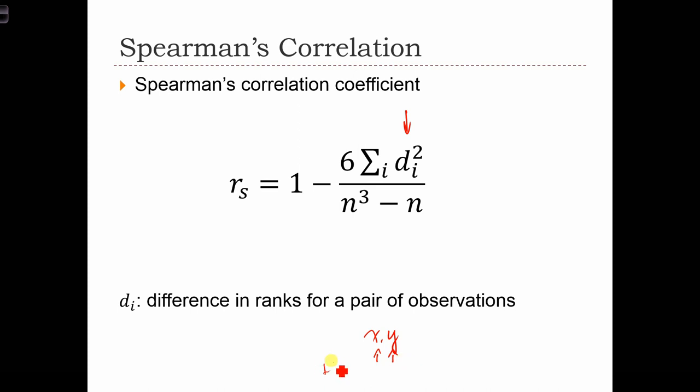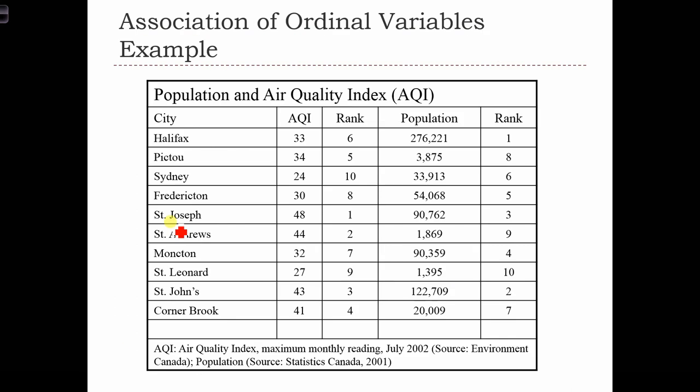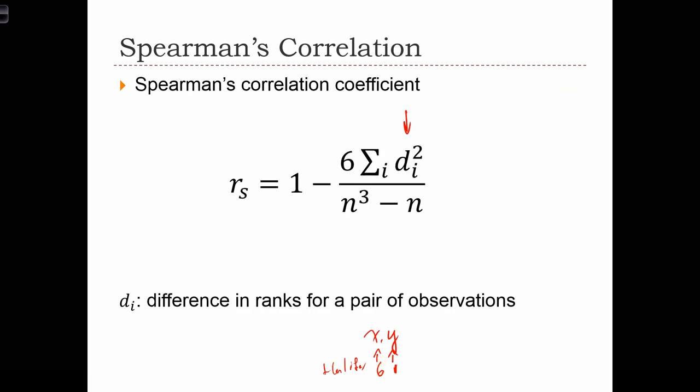So say a city, Halifax, we found that it was the largest city, so it has a rank of 1 in terms of population. And over here, it has an AQI ranking of 6. And therefore, the difference between these two ranks is 6 minus 1 equals 5. So di equals 5, and this term, di squared, equals 25. So we're going to calculate di squared for each observation, each city, sum them all up, and just compute this ratio in order to get the Spearman's rank statistic.